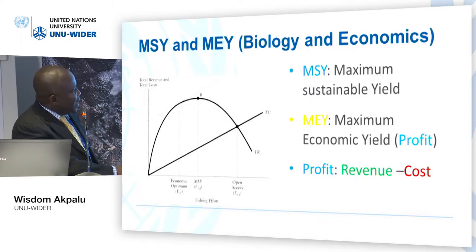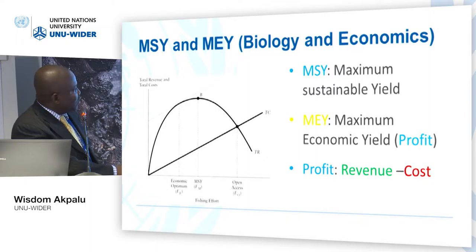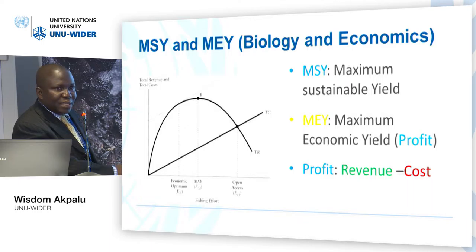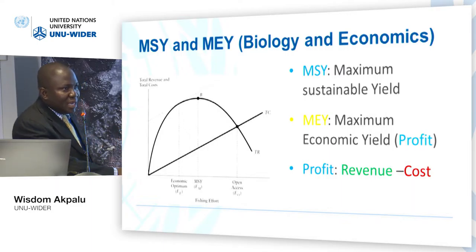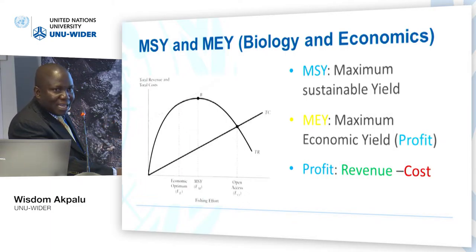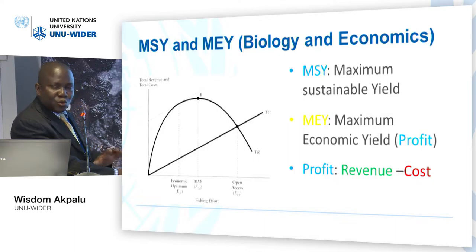However, even if harvest continues until we hit the point of highest revenue, we will not necessarily get the highest profit, because the gap between the two here is smaller than the gap at the economic optimum. This point is the maximum sustainable yield level of effort — it generates the highest catch that can sustain the stock from year to year, but it doesn't give us the maximum possible profit. So if our aim is to maximize profit, we will harvest at a level lower than what the fishery can biologically generate.